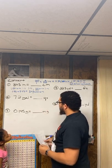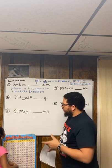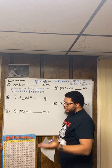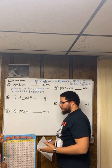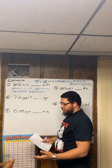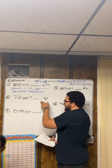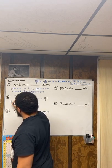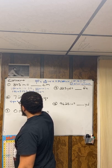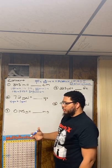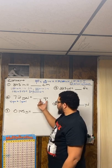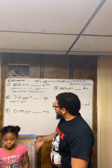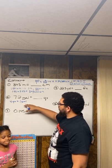First, think about which is the bigger unit — are gallons bigger than quarts, or are quarts bigger than gallons? Think about a gallon of milk versus a quart of milk. A gallon is bigger. A giveaway: 'quart' is like 'quarter,' which is one fourth. So there are four quarts inside one gallon.